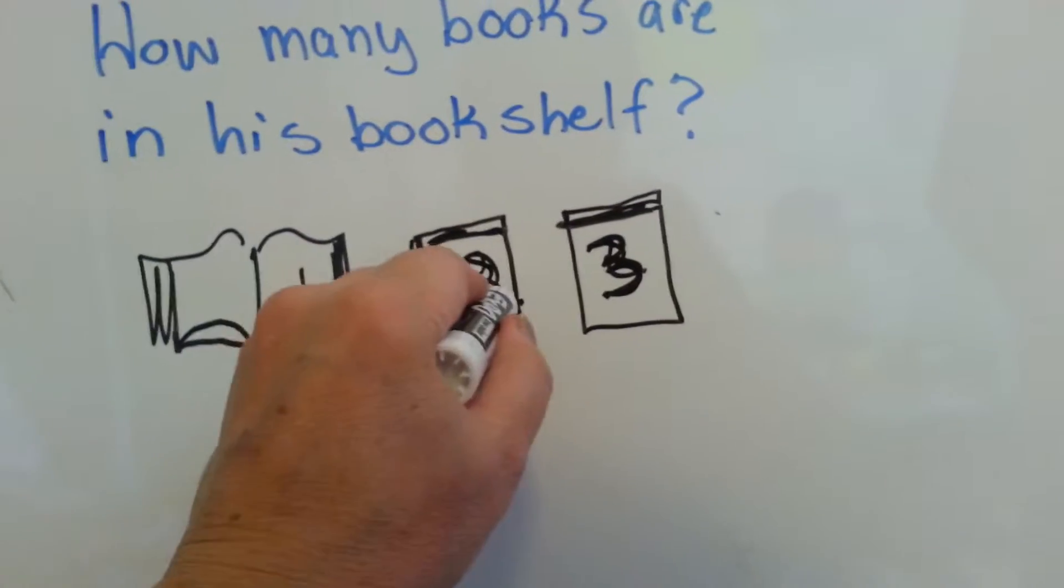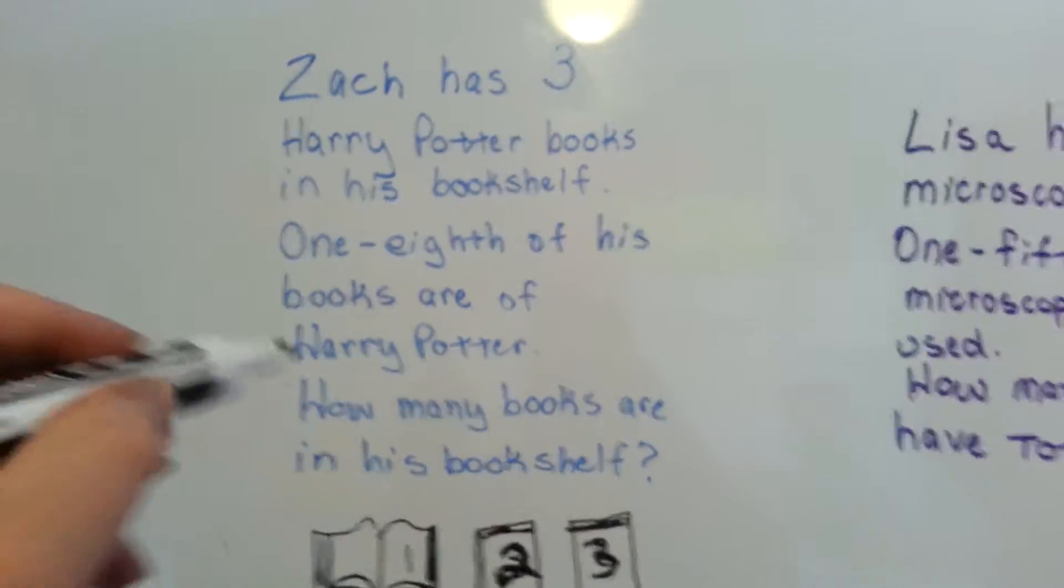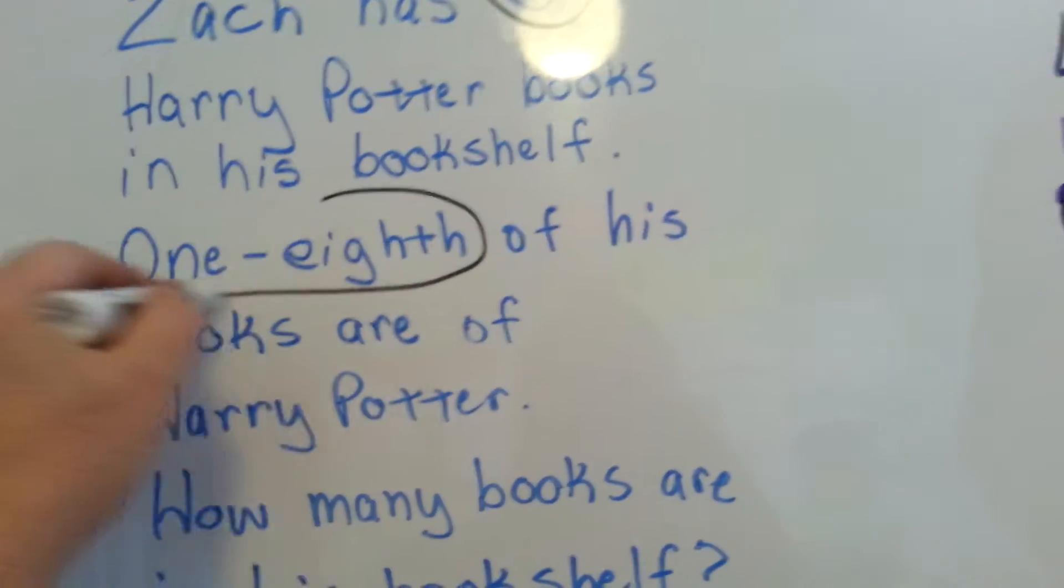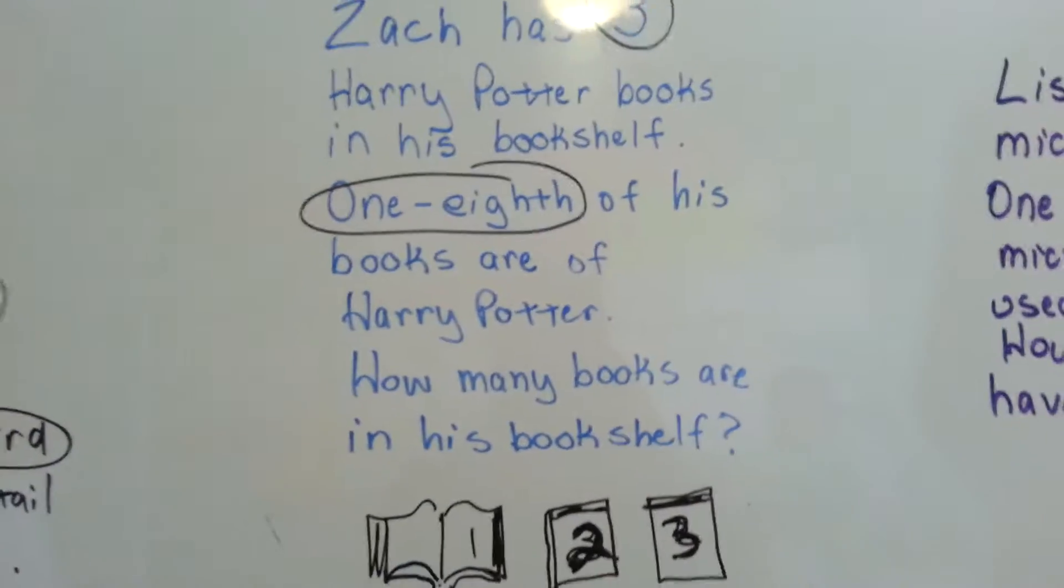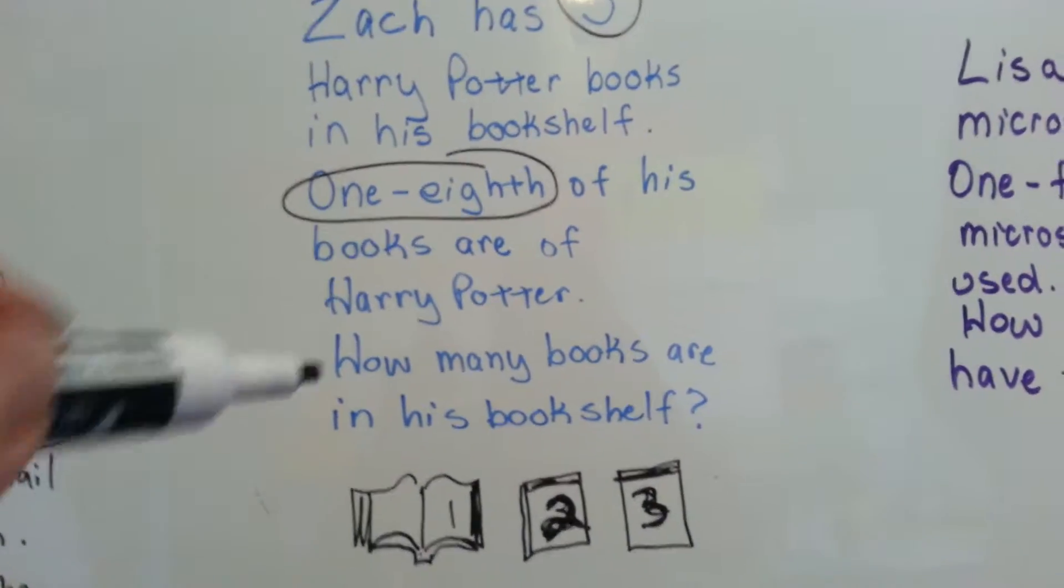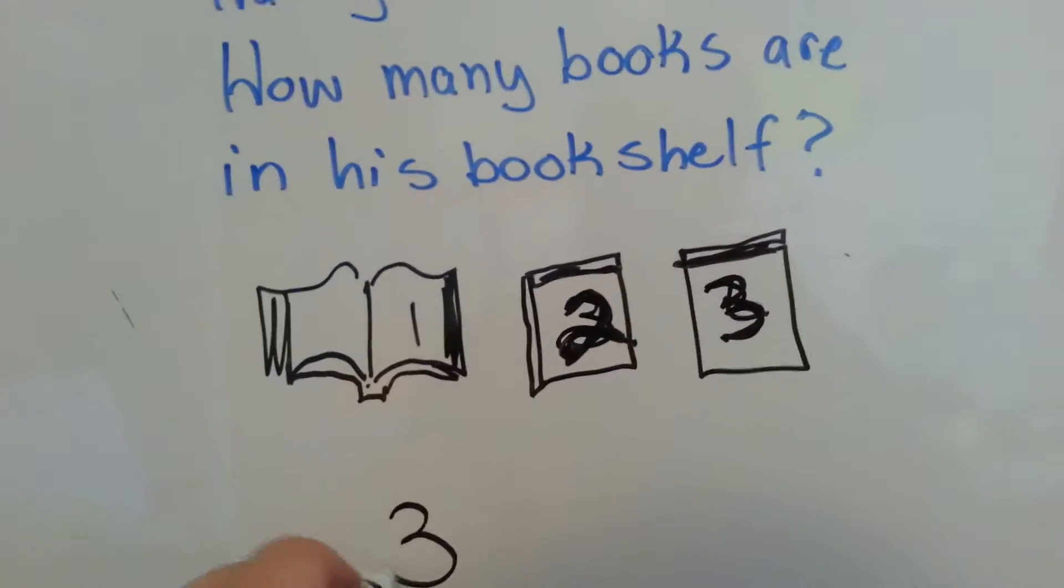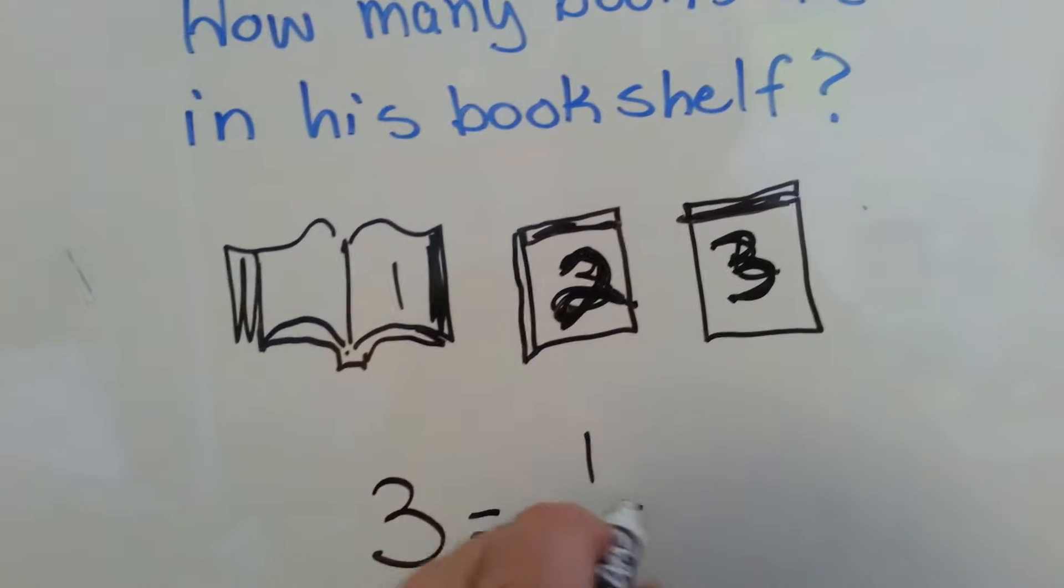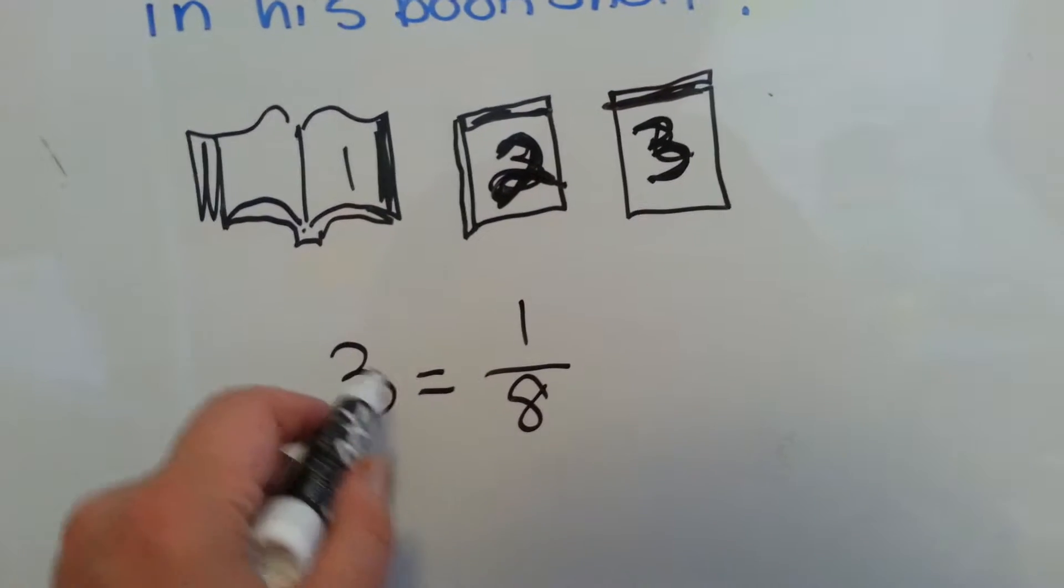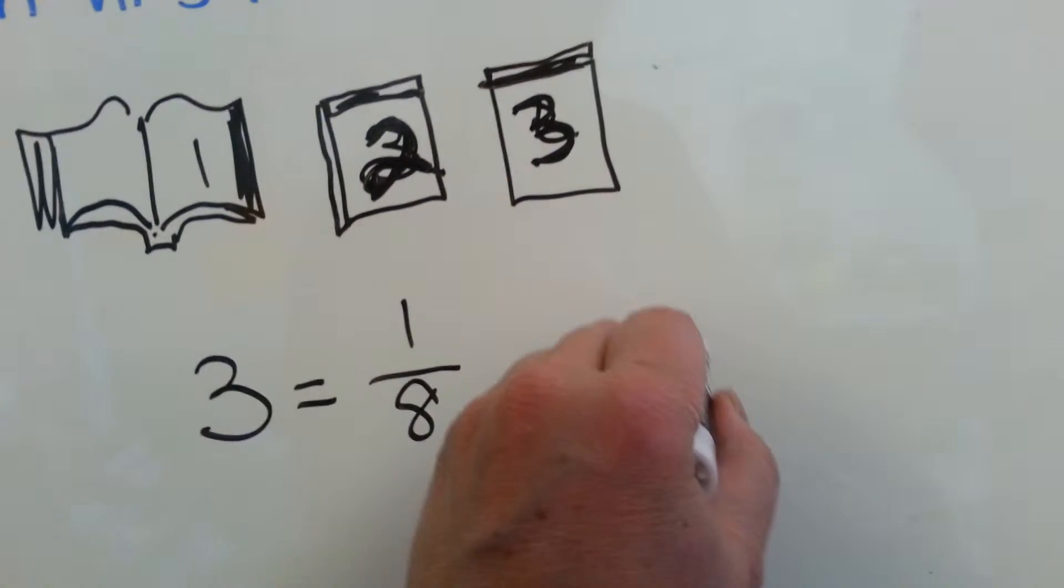These are his three Harry Potter books. So we know that's an important number. Look it. One-eighth of his books are of Harry Potter. These three books are one-eighth of his books. How many books are on his bookshelf in a total? So if three of them is equal to one-eighth, then we need to say three times eight. Three times eight is equal to twenty-four.